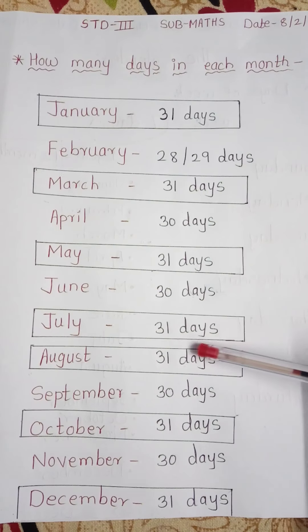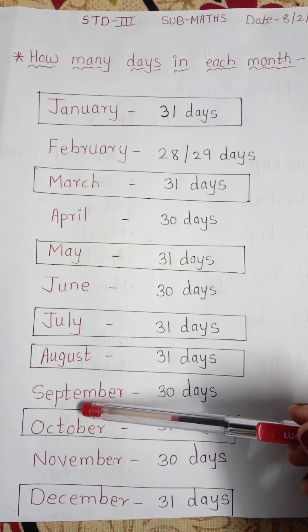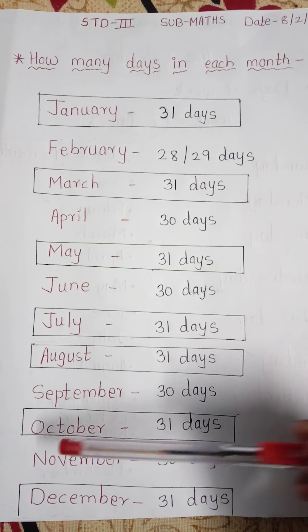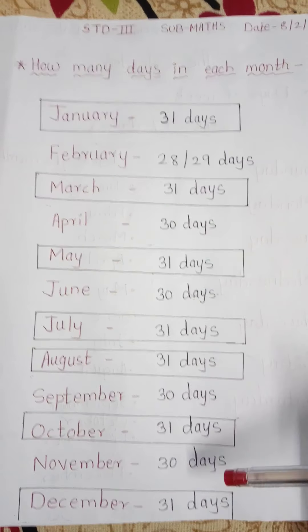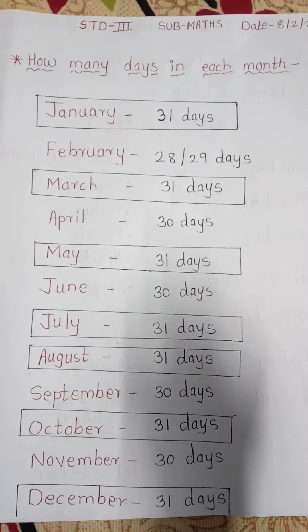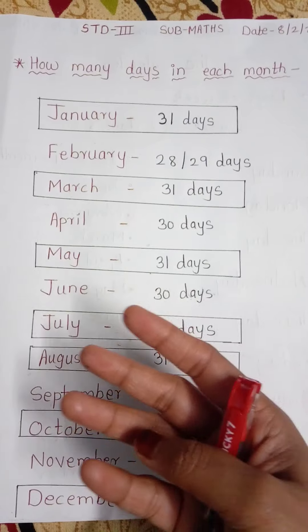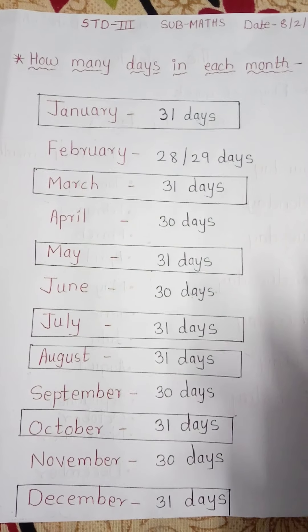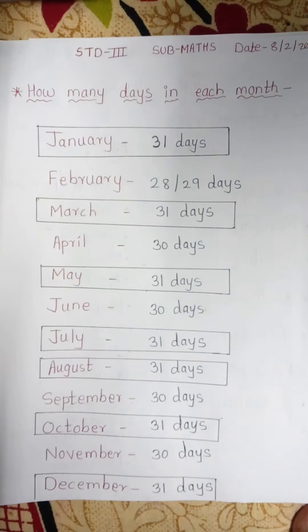In August, how many days? 31 days. September, 30 days. October, 31 days. November, 30 days. And December also 31 days. Now, how can we remember all these days — how many days in January, how many days in June? I will tell you one logic.